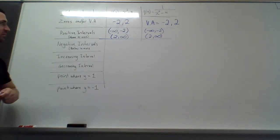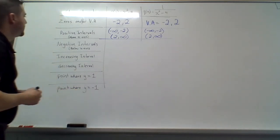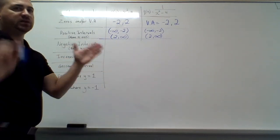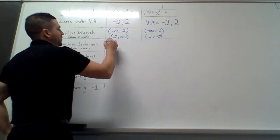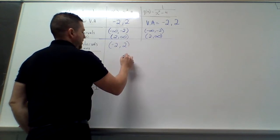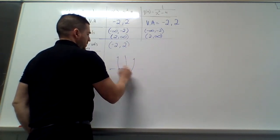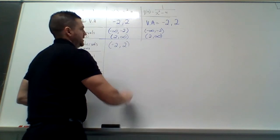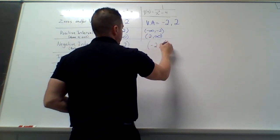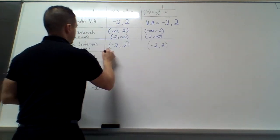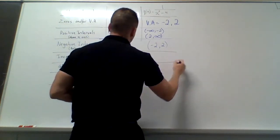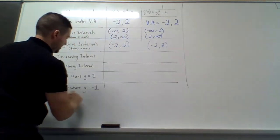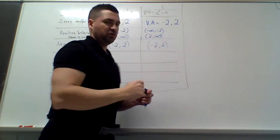For the negative intervals — when is it below the x-axis? It's below the x-axis between the two x-intercepts. So the negative interval goes from negative 2 to positive 2. And you'll note it's the same for the reciprocal function as well.